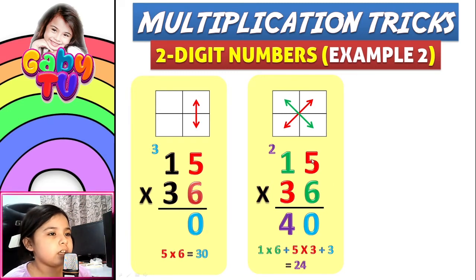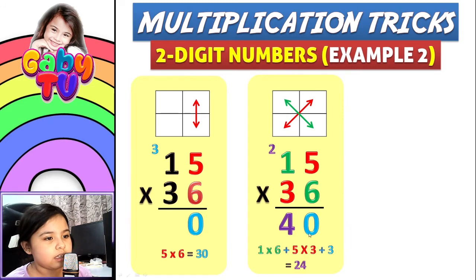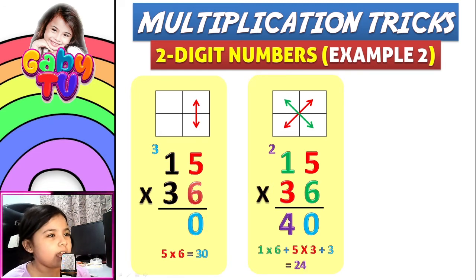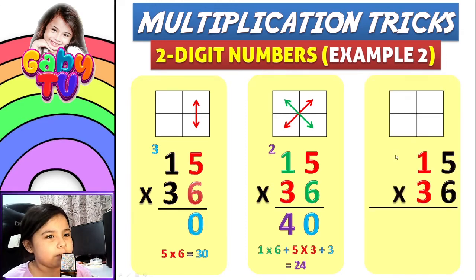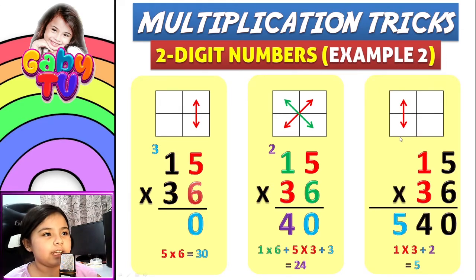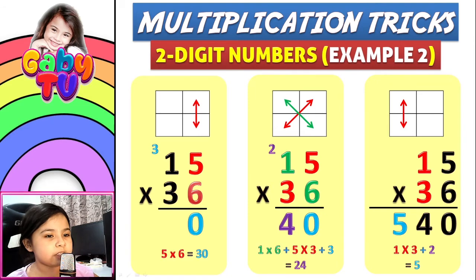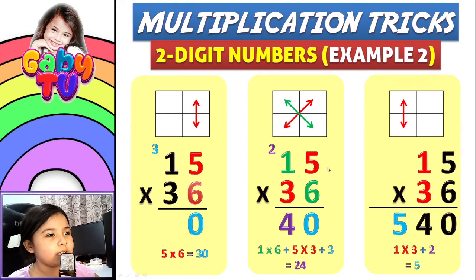...the red numbers: five times three, plus three — this three is from here — and that equals 24. So you write four and put two here. Step three: again multiply the red numbers but this time on the left, so one times three plus two equals five. The number two is from here.